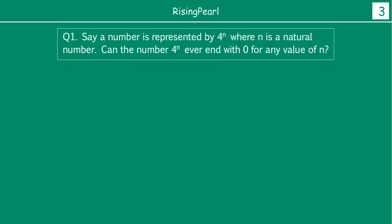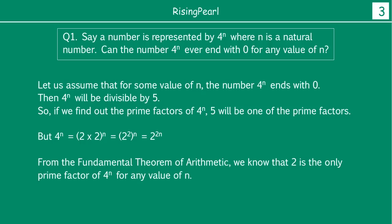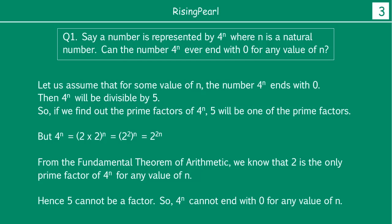So friends, how do we write this if it comes up in a test? We start with the question and say: let's assume that for some value of n, 4^n ends with 0. Then 4^n will be divisible by 5, so 5 will be one of its prime factors. But 4^n equals (2 times 2) to the power n, which is 2 to the power 2n. From the fundamental theorem of arithmetic, we know 2 is the only prime factor of 4^n for any value of n. Hence 5 cannot be a factor, so 4^n cannot end with 0 for any value of n.